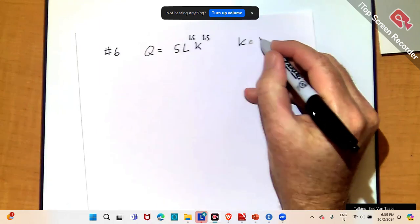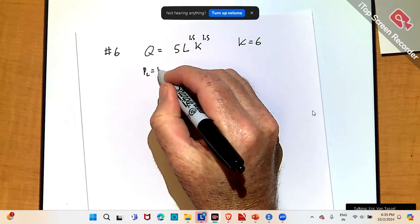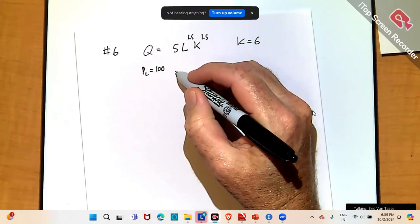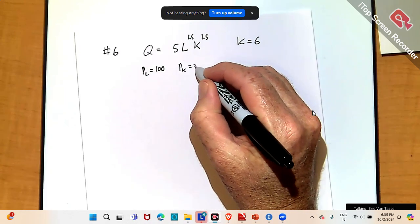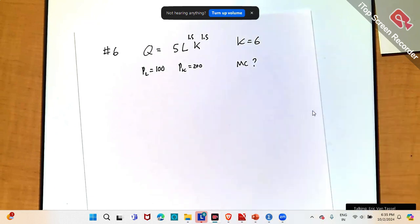K is fixed at 6 units in the short run. Price of labor is $100. Price of capital is $200. And I want to know marginal cost of production.